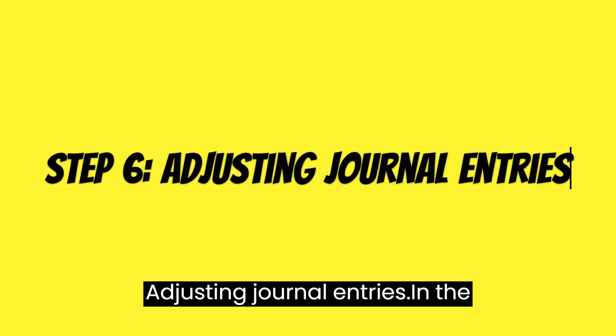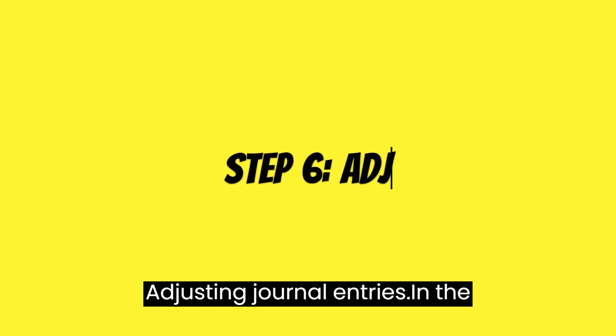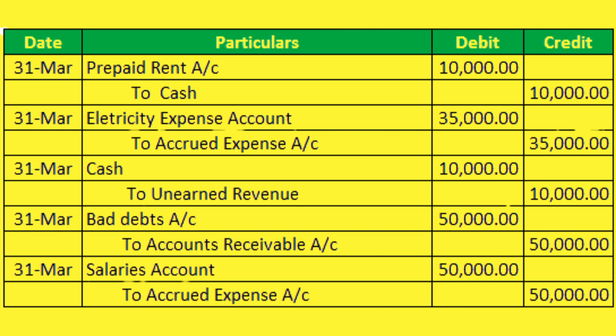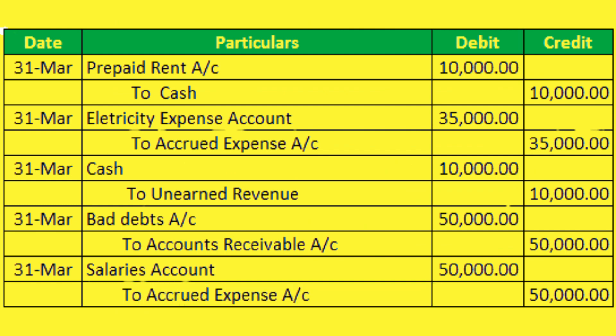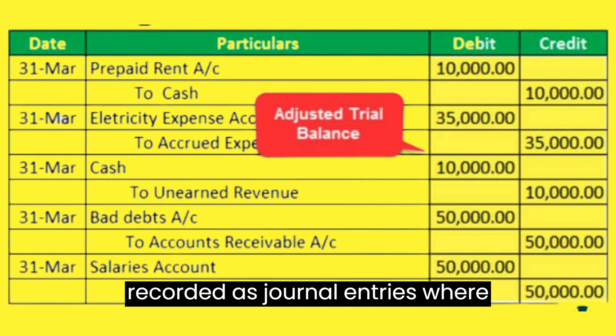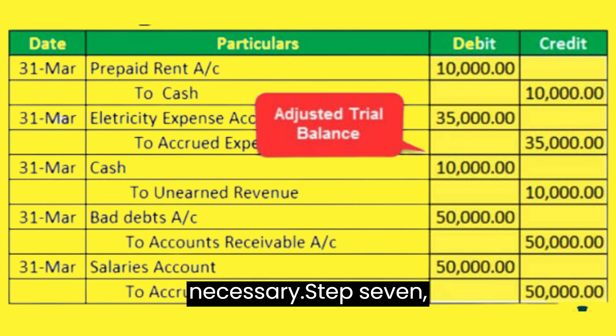Step 6: Adjusting journal entries. In the sixth step, a bookkeeper makes adjustments. Adjustments are recorded as journal entries where necessary.